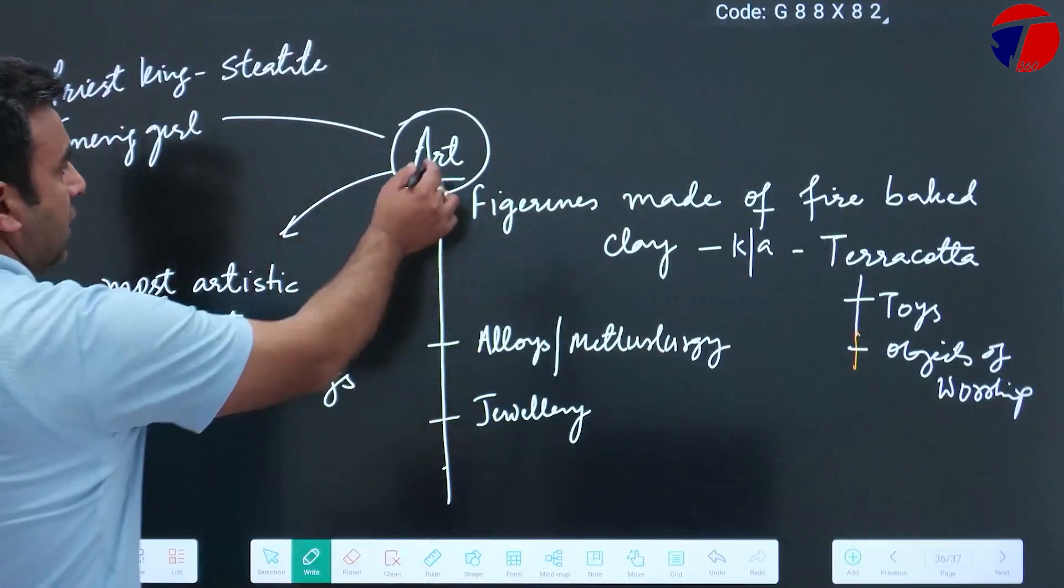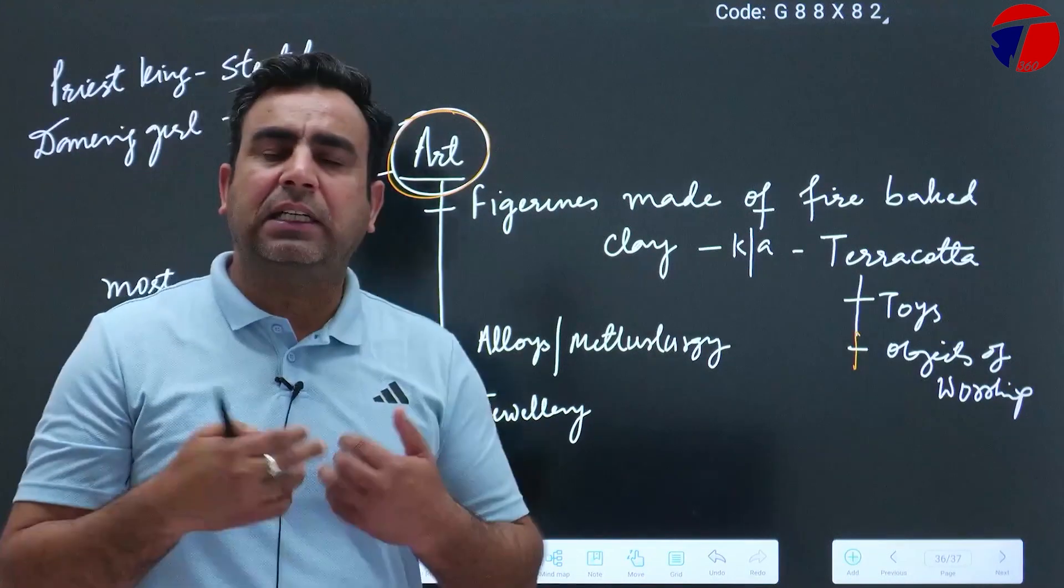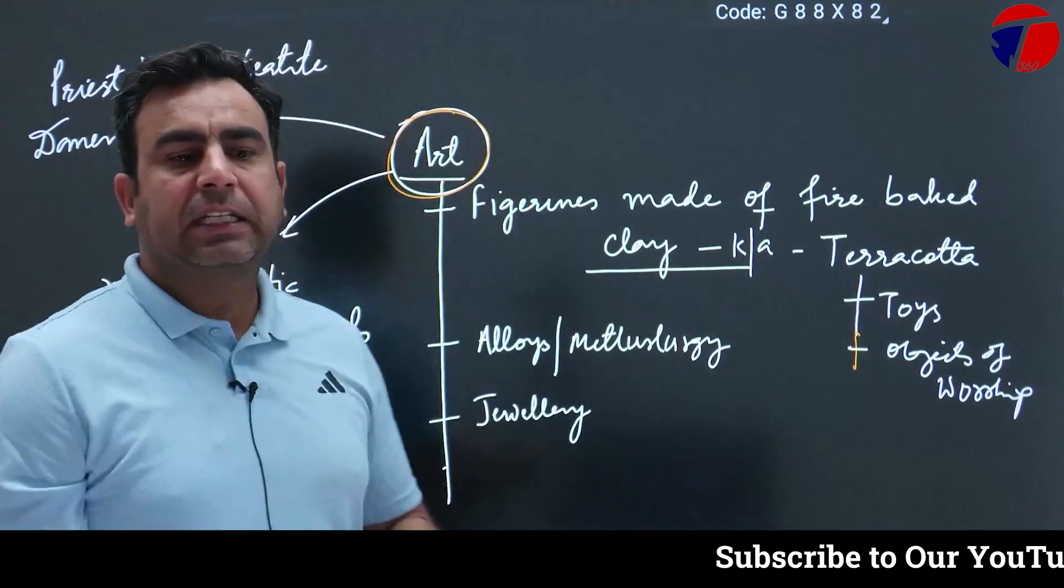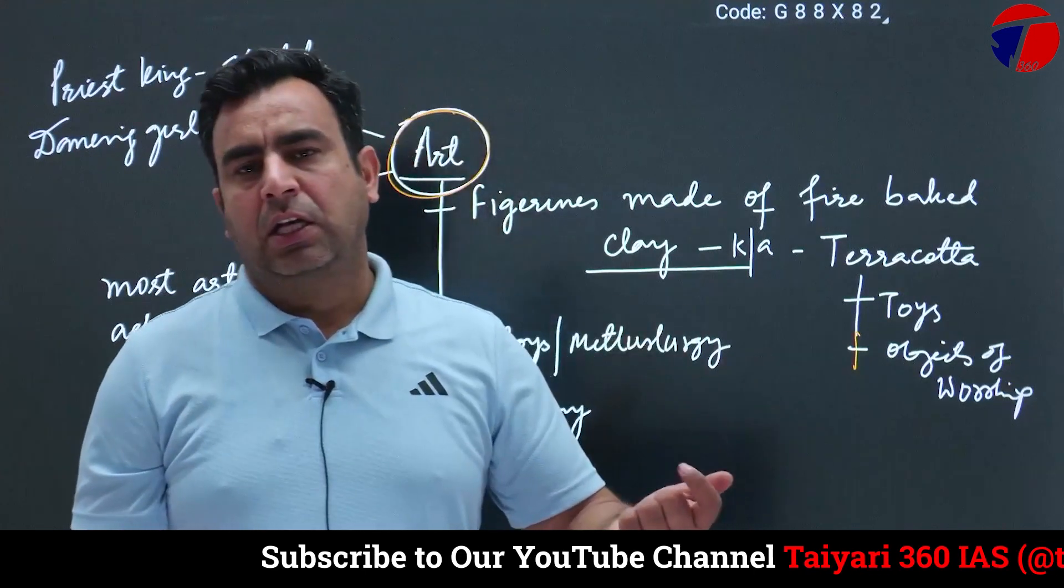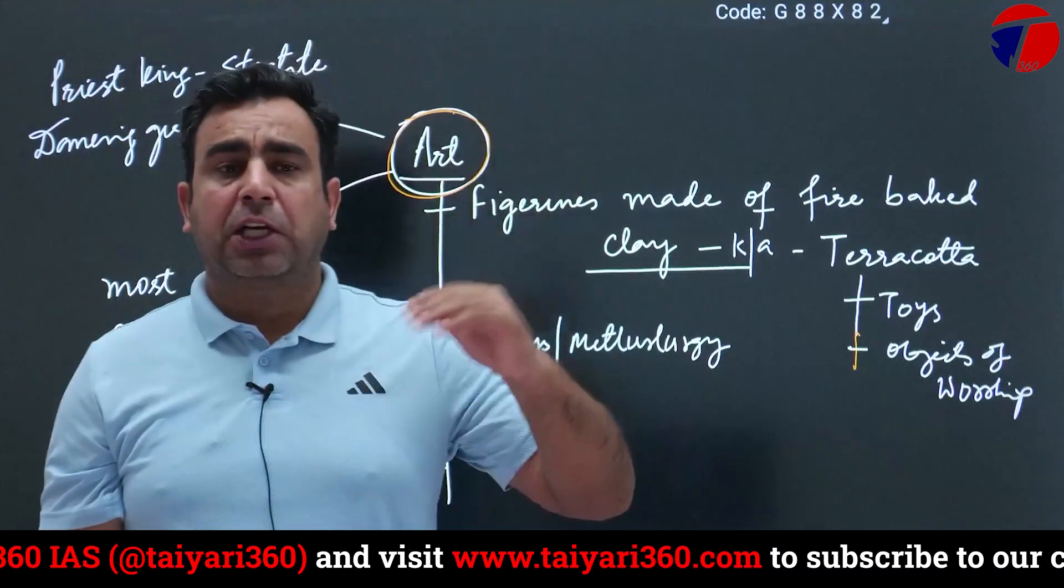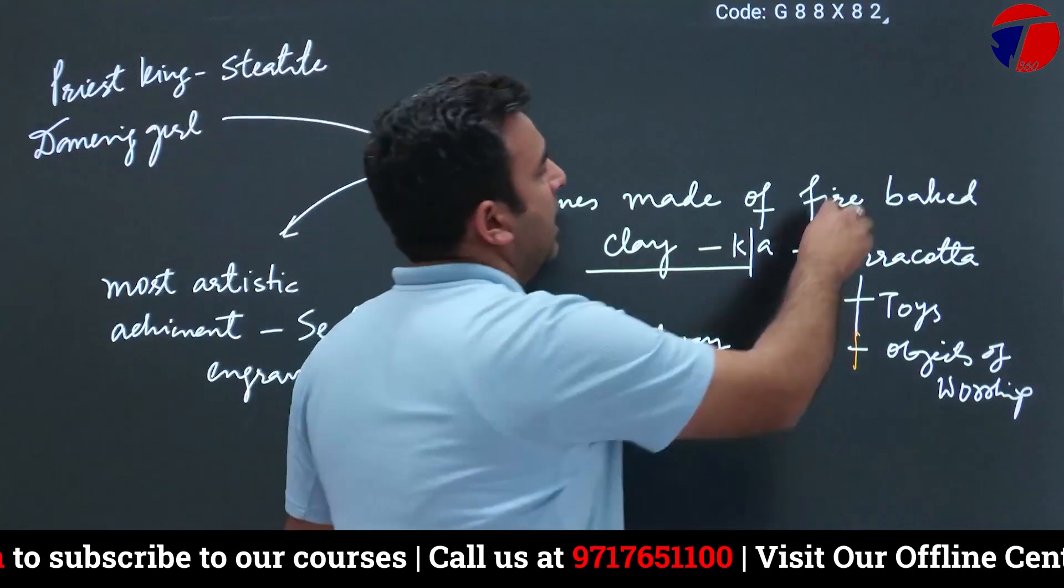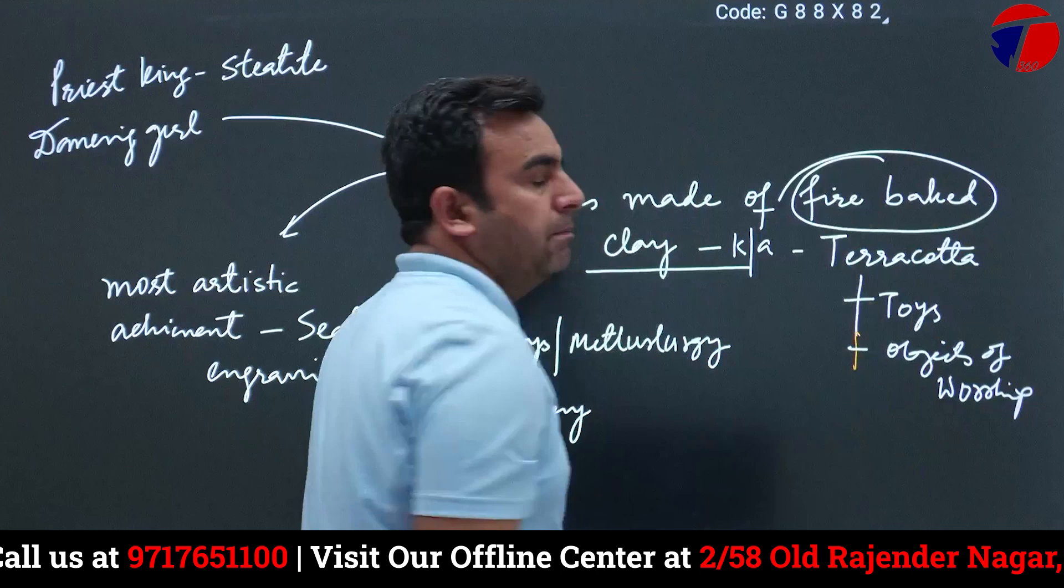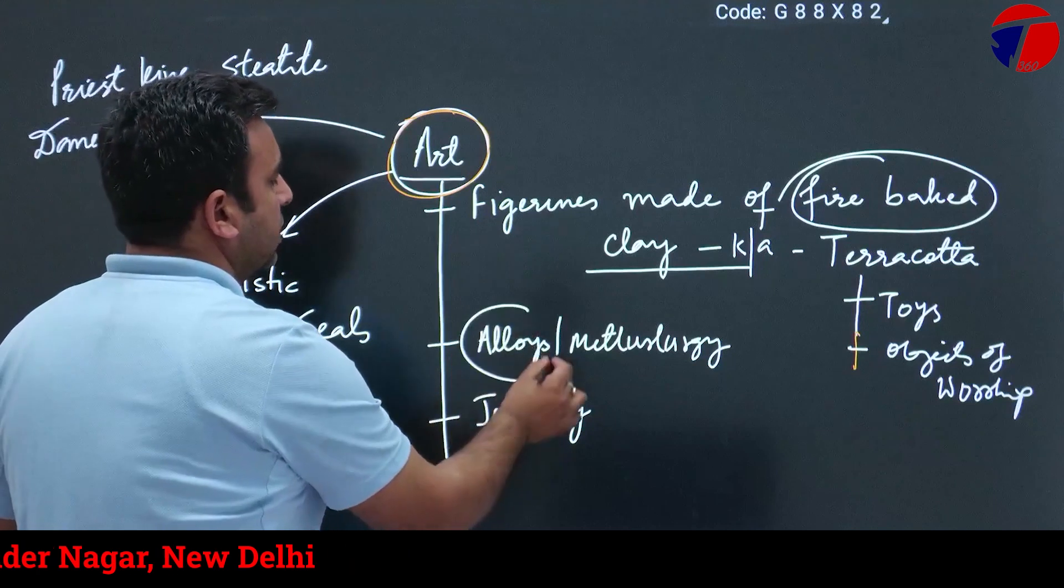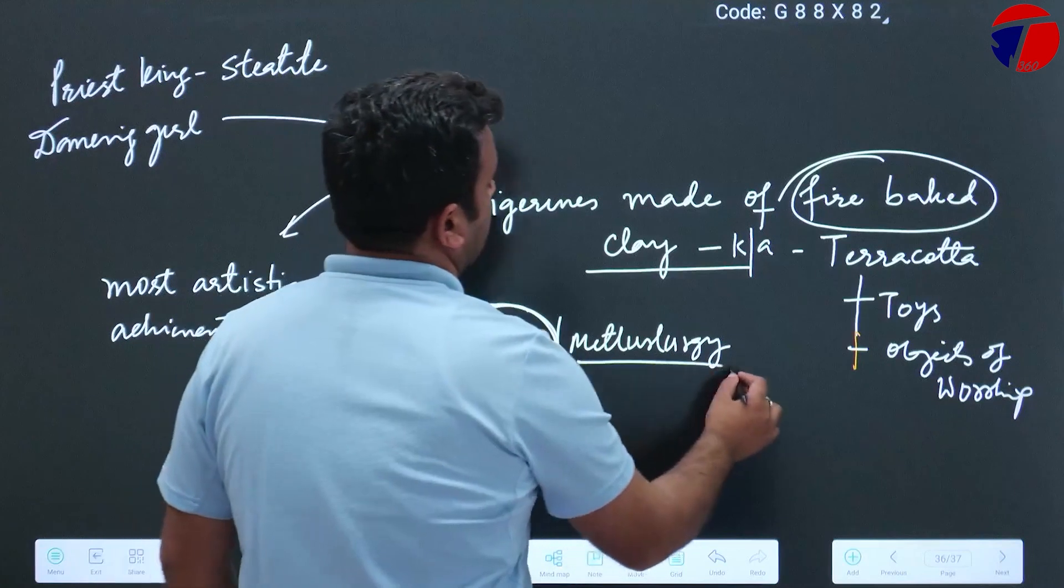Next is art of Indus Valley civilization. Art is very popular - artisans made many things. The most common material was baked clay, known as terracotta. Terracotta figures, terracotta toys, terracotta objects for worship, terracotta plows - all these made from baked clay.